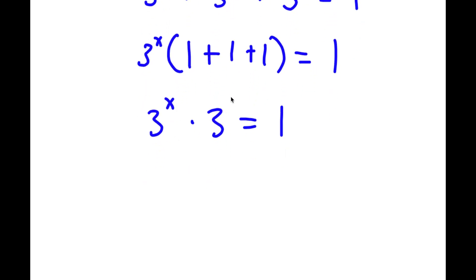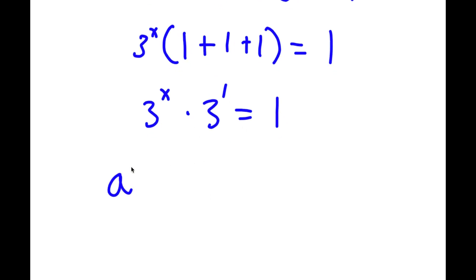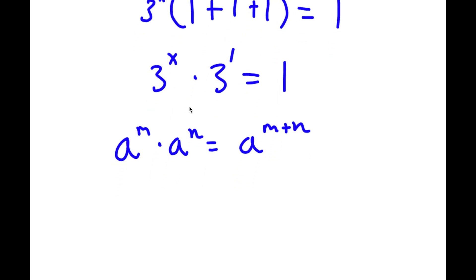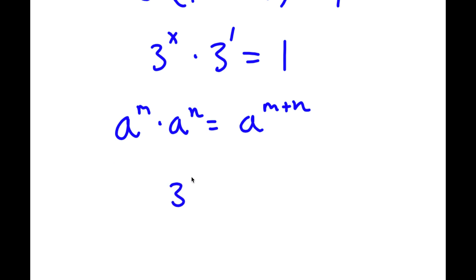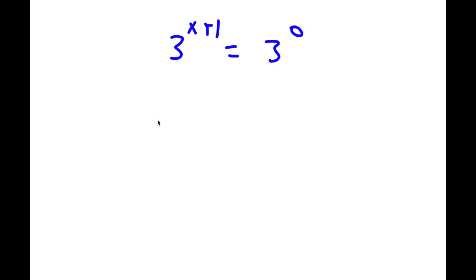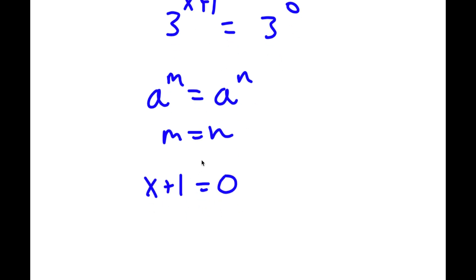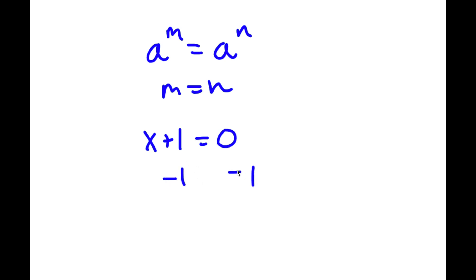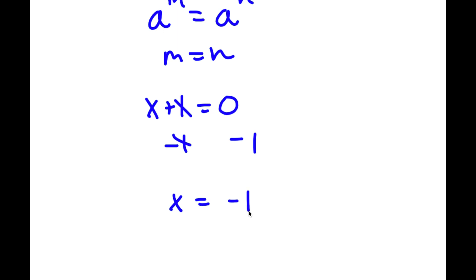Now, 3 is the same thing as 3 to the power of 1. Using the rule a^m × a^n = a^(m+n), 3 to the power of x times 3 to the power of 1 equals 3 to the power of x plus 1, which equals 1. And 1 is the same as 3 to the power of 0, since anything to the power of 0 equals 1. So 3 to the power of x plus 1 equals 3 to the power of 0, which means x plus 1 equals 0. Subtracting 1 from both sides gives x equals negative 1.